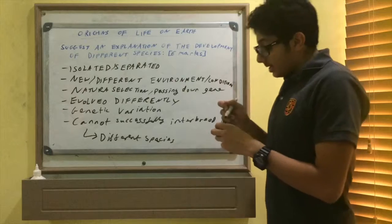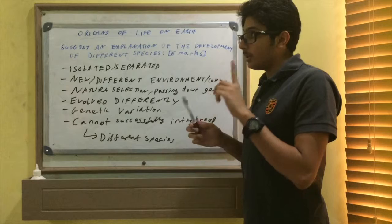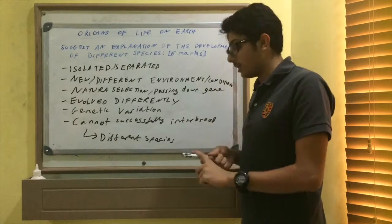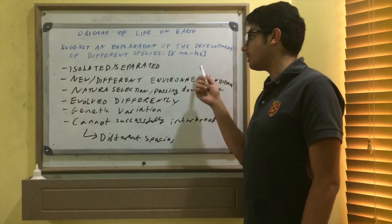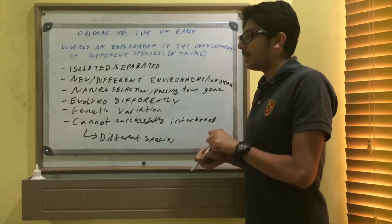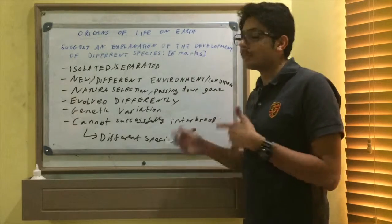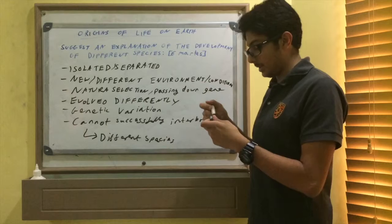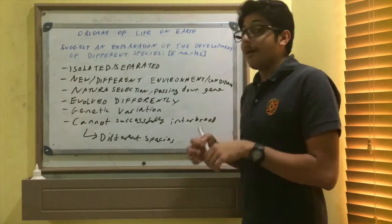That's your standard six marker on explanation of development of new species and speciation. This might come up in your next exam because it has not really occurred in the 2015, 2014, or 2013 papers. So it might be a high likelihood of this coming up. But then again, they might give you a more important six marker on other topics. Bye!